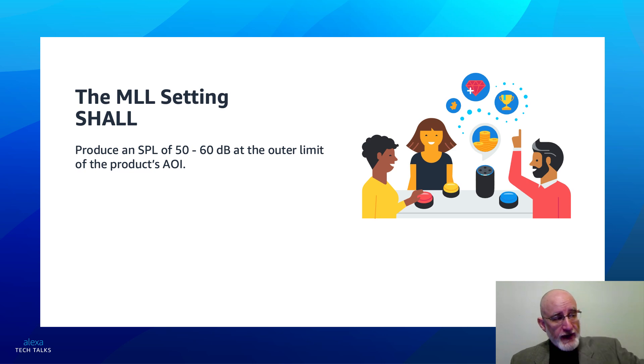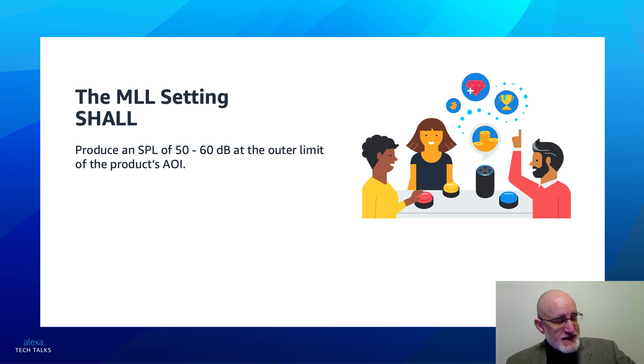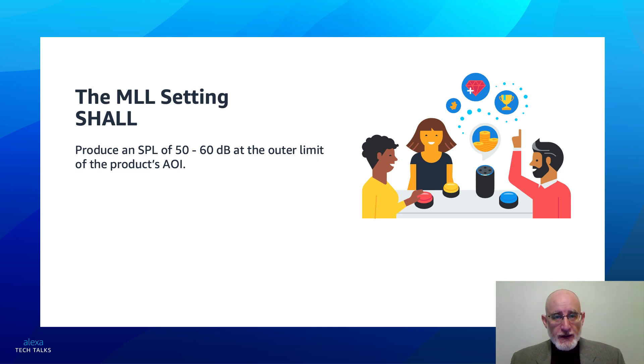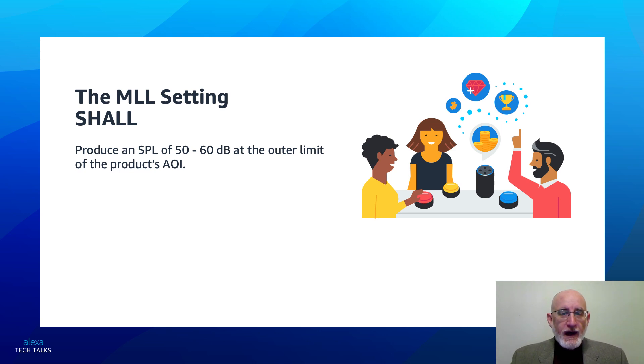So if I have a product that is rated at far-field and I am standing nine feet away from that product, I should experience 50 to 60 dB sound pressure level when I am having an interaction with Alexa. This is an important factor in understanding how to design what we're going to talk about next.